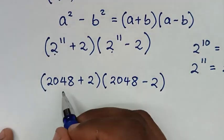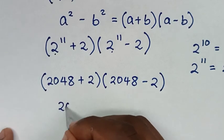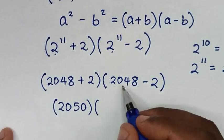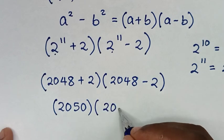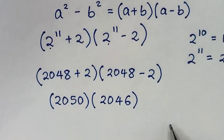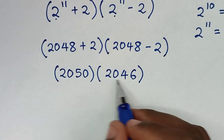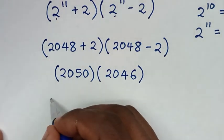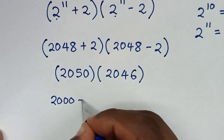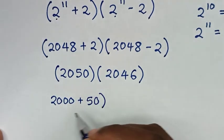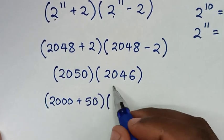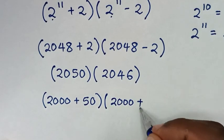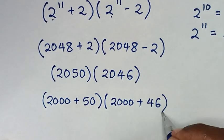Then in the next step, we simplify: 2048 plus 2 is 2050, and 2048 minus 2 is 2046. So we have 2050 times 2046, which we rewrite as (2000 plus 50) times (2000 plus 46).